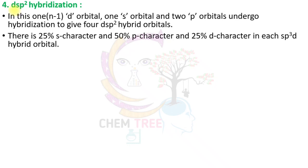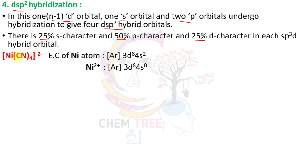The fourth type is DSP² hybridization. In DSP² hybridization, the inner (n-1) d orbital, 1s orbital, and 2p orbitals are intermixed to produce 4 DSP² hybrid orbitals. The s character is 25%, p character is 50%, and d character is 25%.